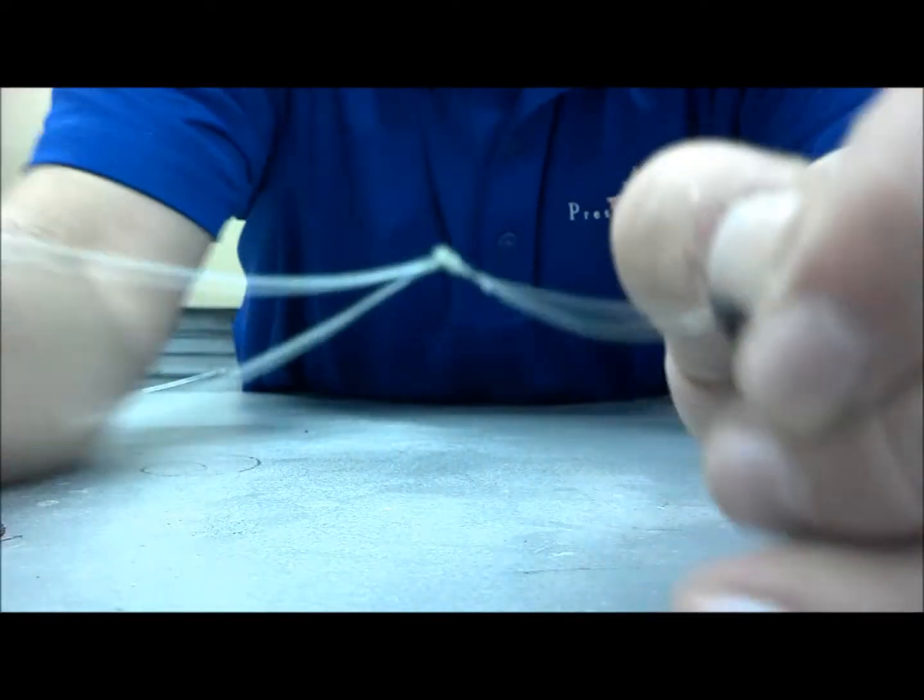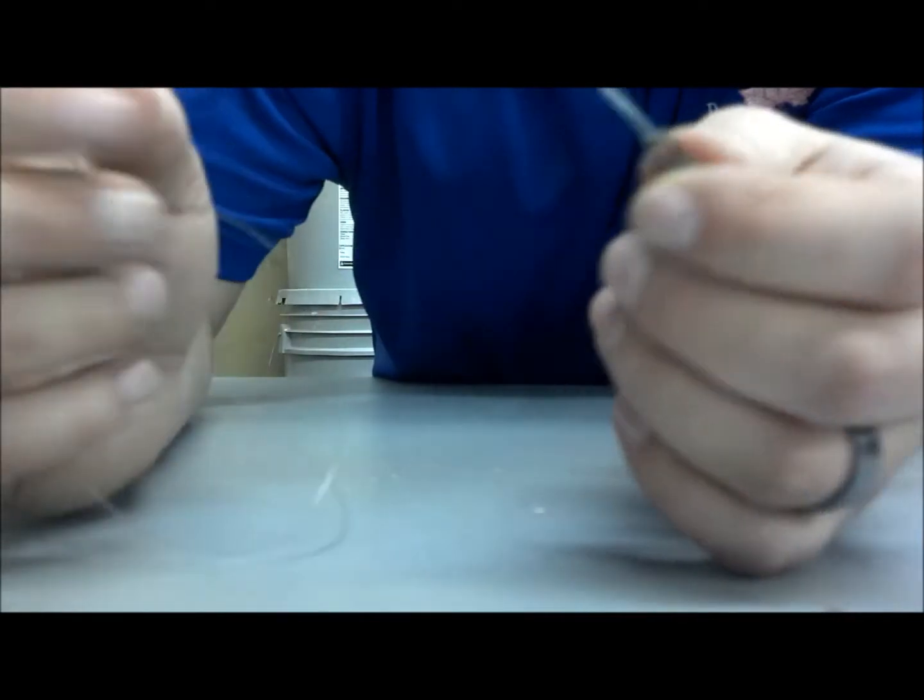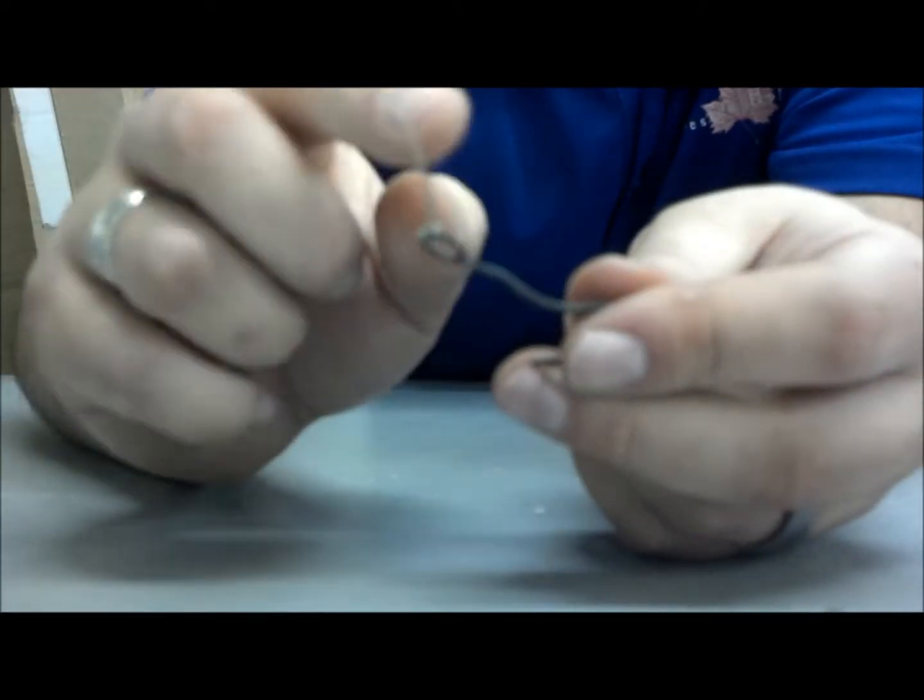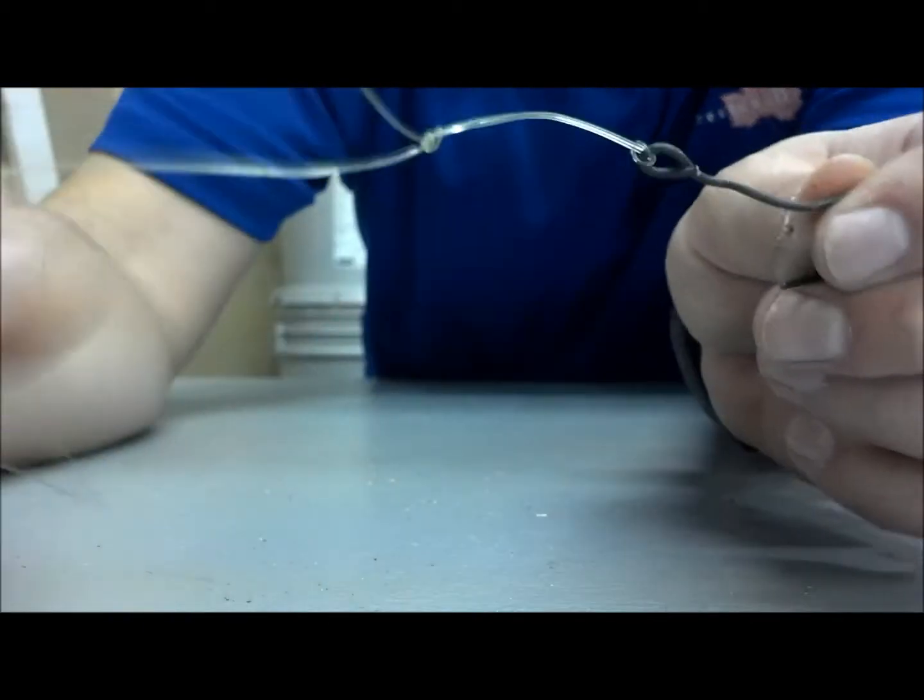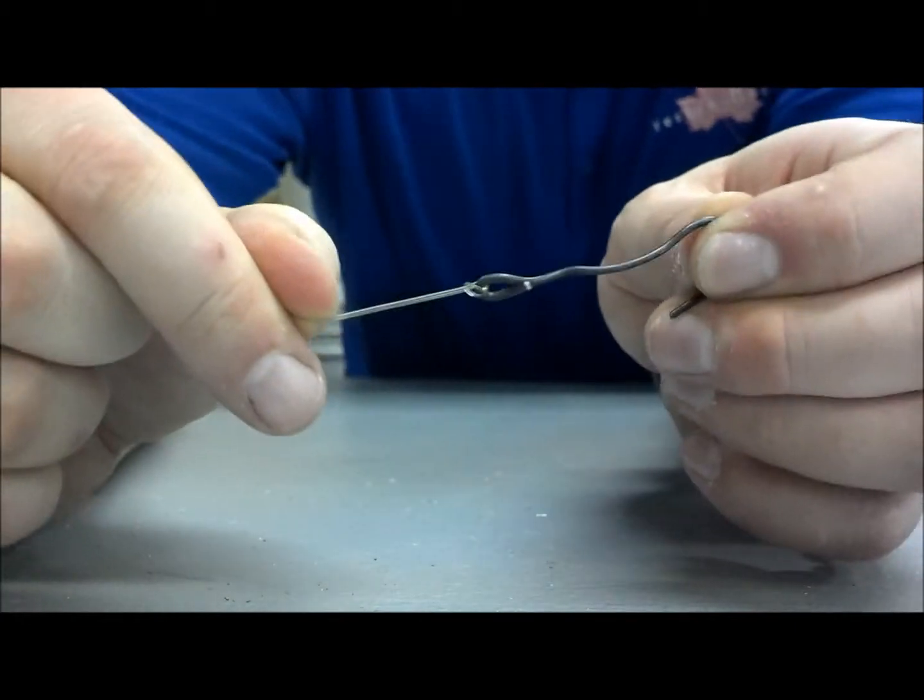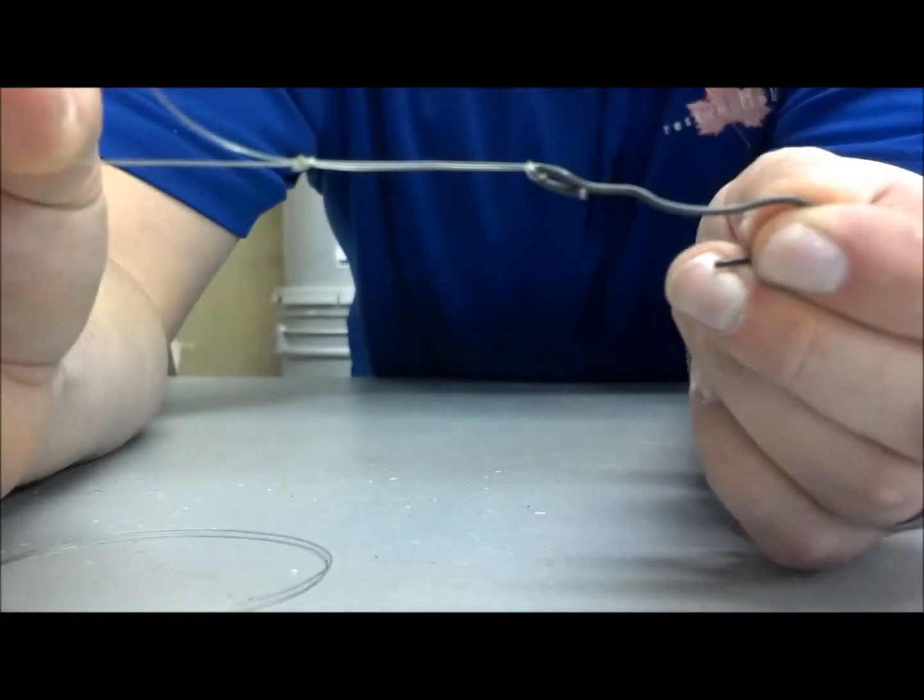Now what I like to do is run this loop through the hook and run your end. I ran my loop, I put my loop through the eye of the hook, grab my end of my leader, put it through that. And then I forgot what the name of this knot is. I have no idea what the knot is, but that's how I like to do it.